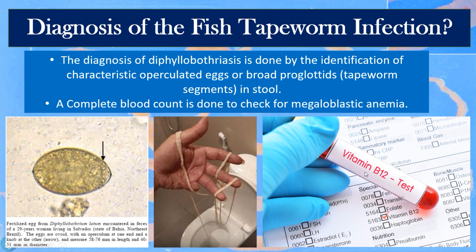A complete blood count can also be performed to check for megaloblastic anemia. Since these tapeworms absorb a large amount of the patient's vitamin B12, blood tests checking for low vitamin B12 levels can provide an indication of fish tapeworm infection.